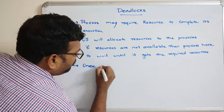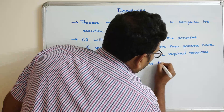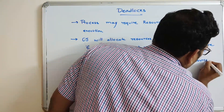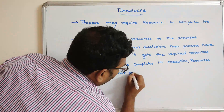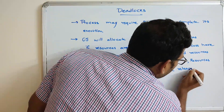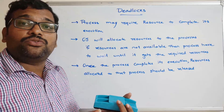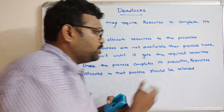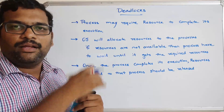Third, once the process completes its execution, the resources allocated to that process should be released — de-allocated — so that those resources may be used by another process. The operating system will find the available resources and allocate them to the corresponding processes which require them.